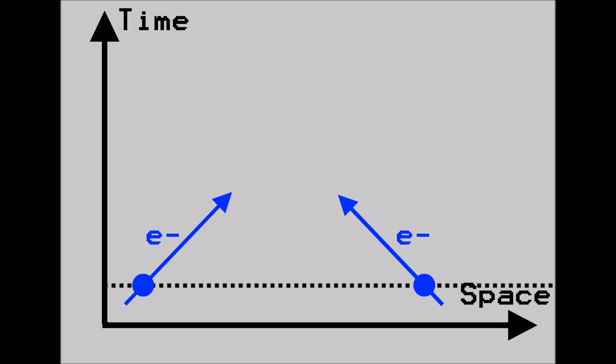So, if we now draw a set of axes, with space going horizontally and time going vertically, we can represent this electron motion by two lines pointing diagonally upwards. Taking horizontal cross-sections of these two lines going upwards on the time axis shows the electrons moving closer together in space.